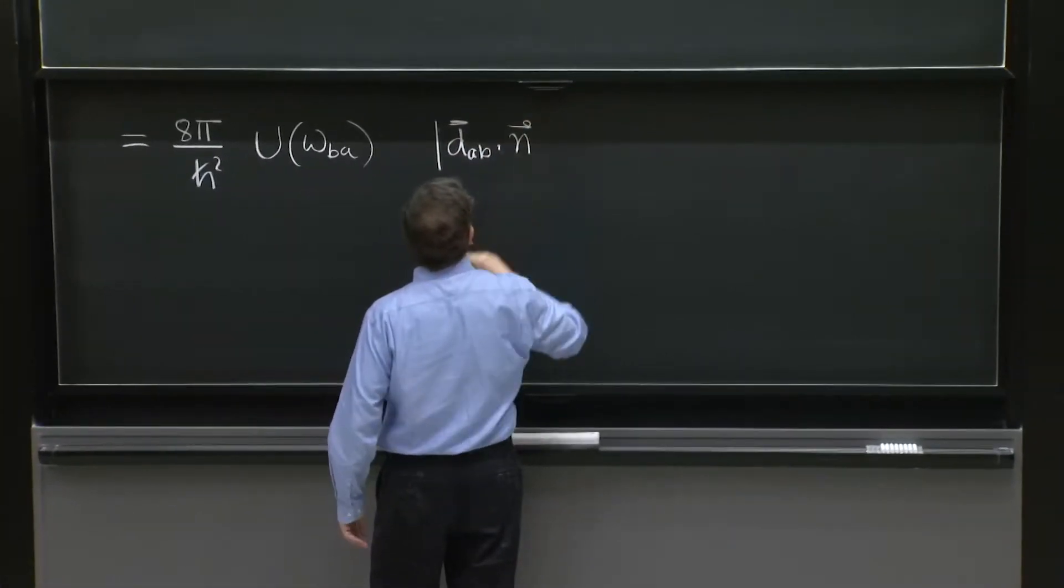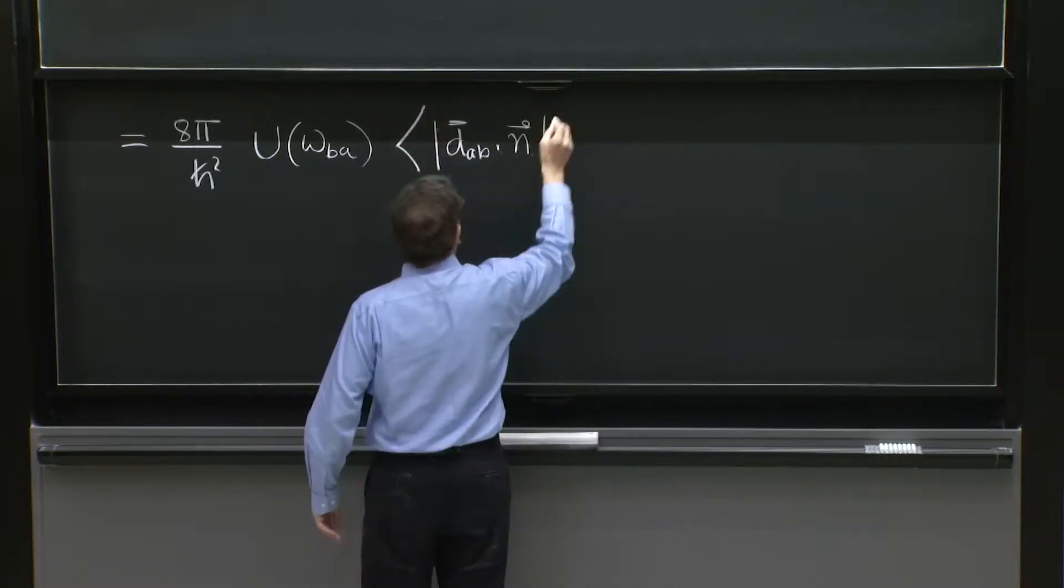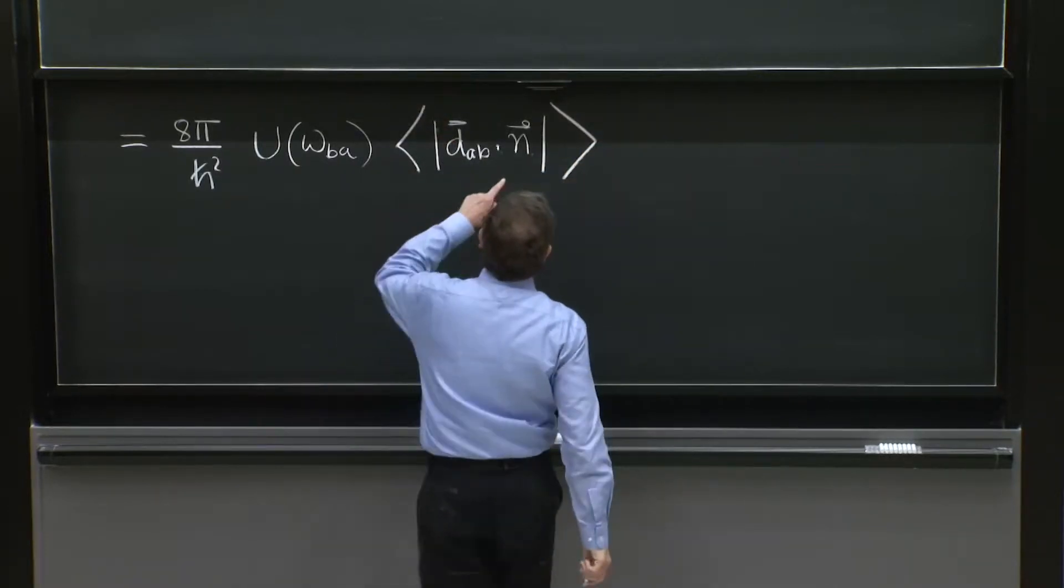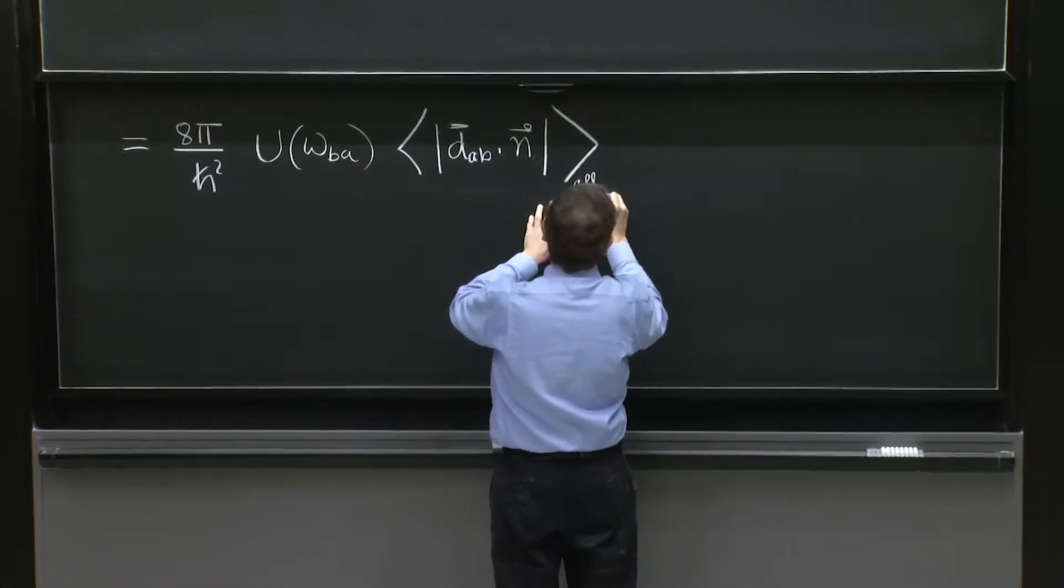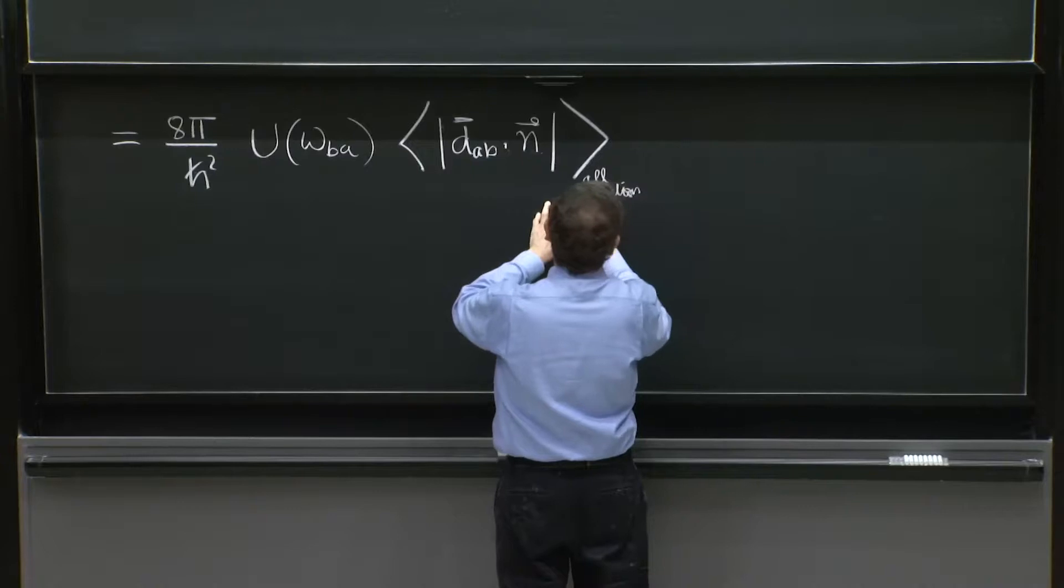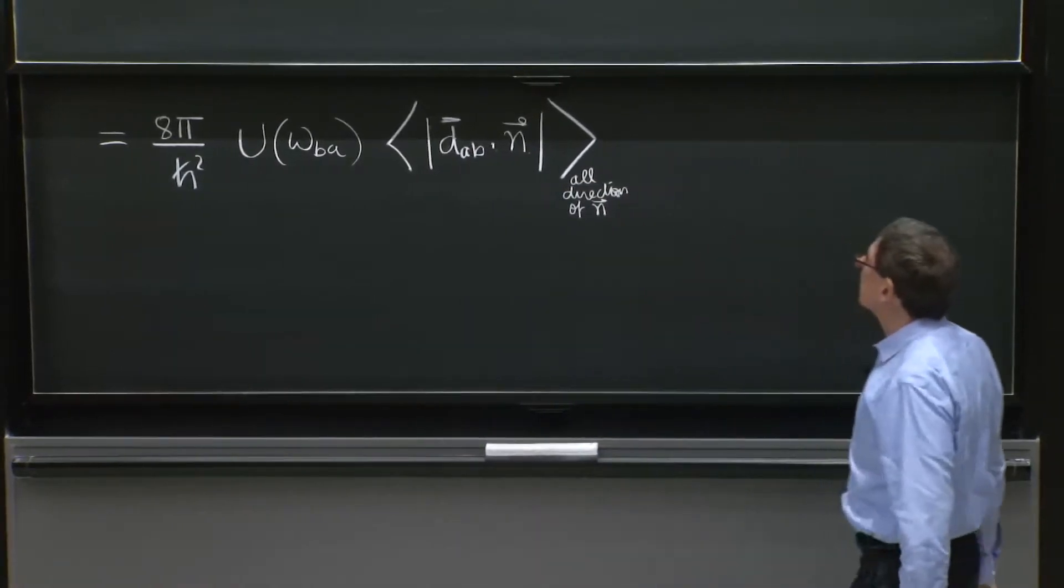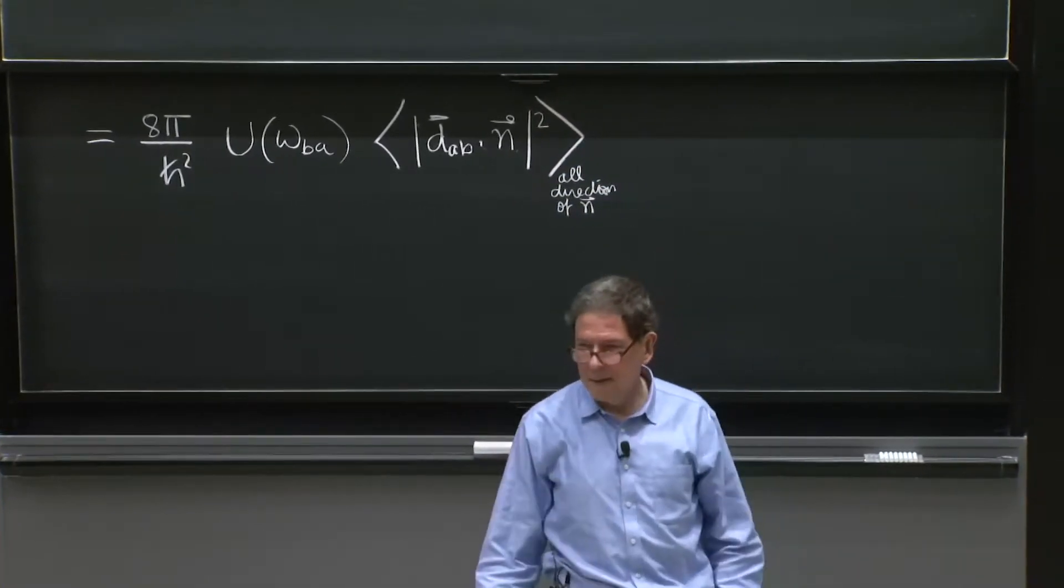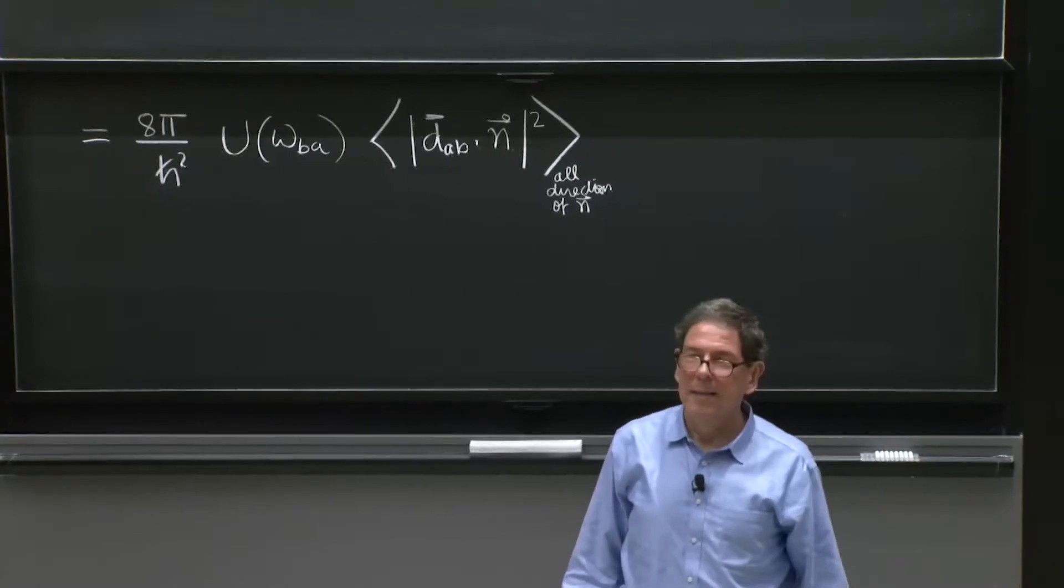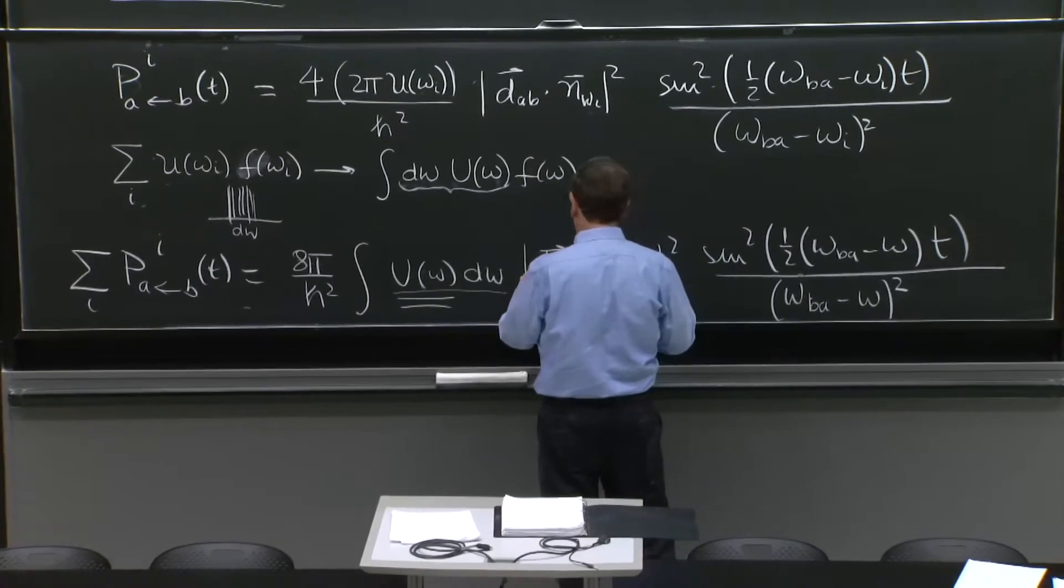but we must do an average over all directions of omega. So this factor will go out as d_AB dot n, but here we will average over all directions of n. And it's a square here.